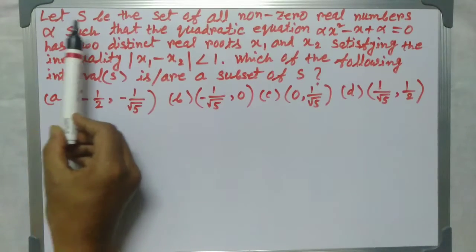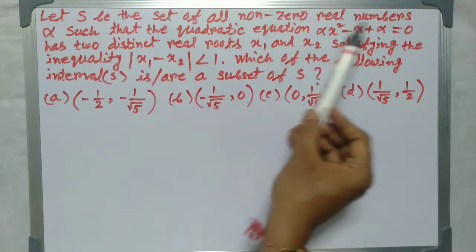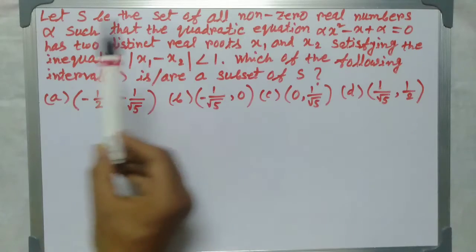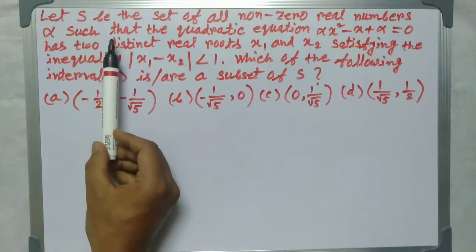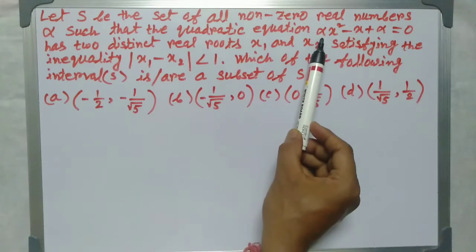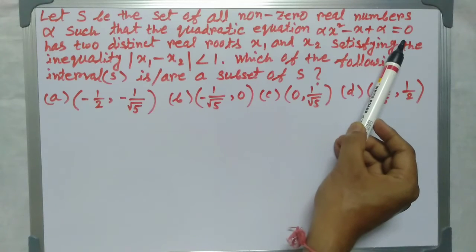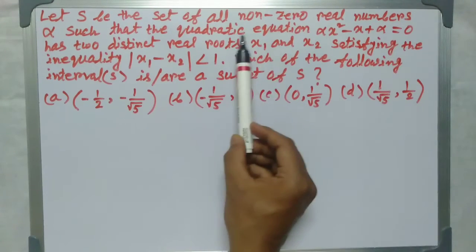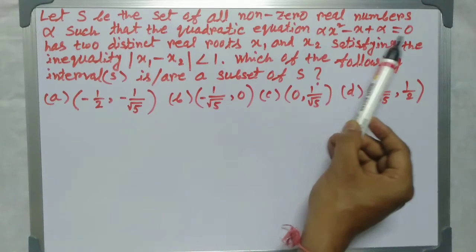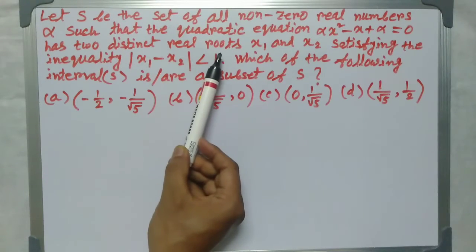Let S be the set of all nonzero real numbers alpha such that the quadratic equation αx² - x + α = 0 has two distinct real roots.